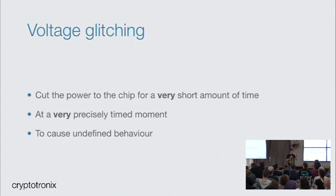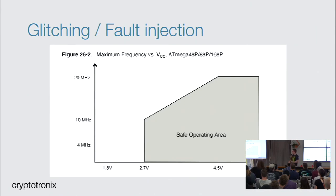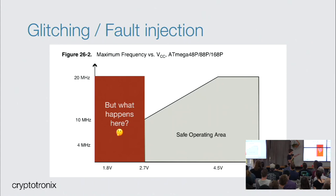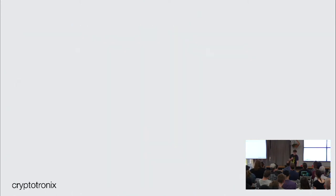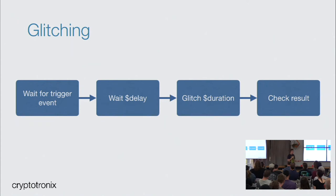With voltage glitching, you try to cut the power at a very precise moment in time to cause undefined behavior. If you look at a chip datasheet, it has a safe operating area — up to a certain voltage it will run at a certain MHz, and so on. What's very interesting is what happens if you go outside this safe operating area — you drop the voltage further, or try to go into higher frequencies with the clock signal.